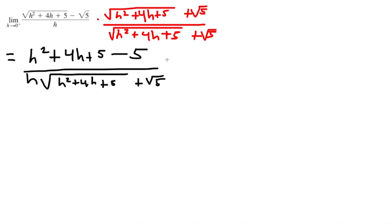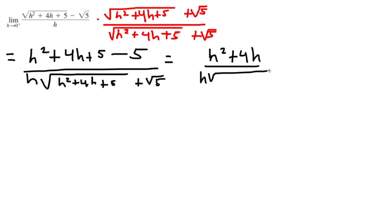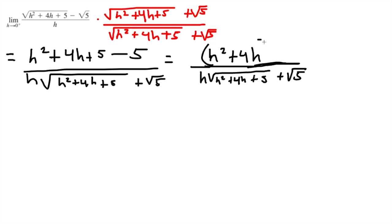Simplifying: on the top, the plus 5 and minus 5 cancel to give 0, so we have h squared plus 4h. We can factor out h from the top to get h times (h plus 4), all over h times the square root of h squared plus 4h plus 5, plus the square root of 5.